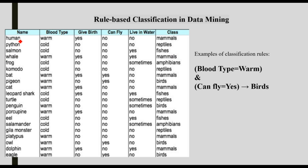For a human: blood type is warm, give birth is yes, can fly is no, live in water is no — so it belongs to the mammals class. For a python: blood type is cold, give birth is no, can fly is no, live in water is no — so it belongs to reptiles.